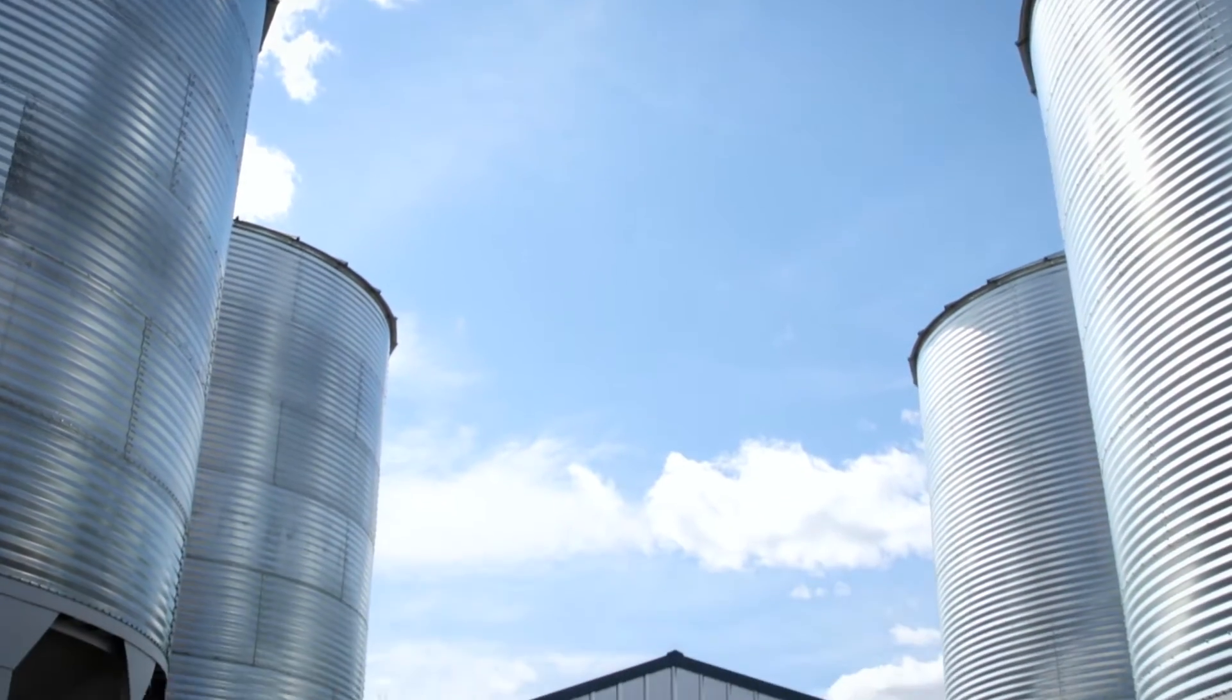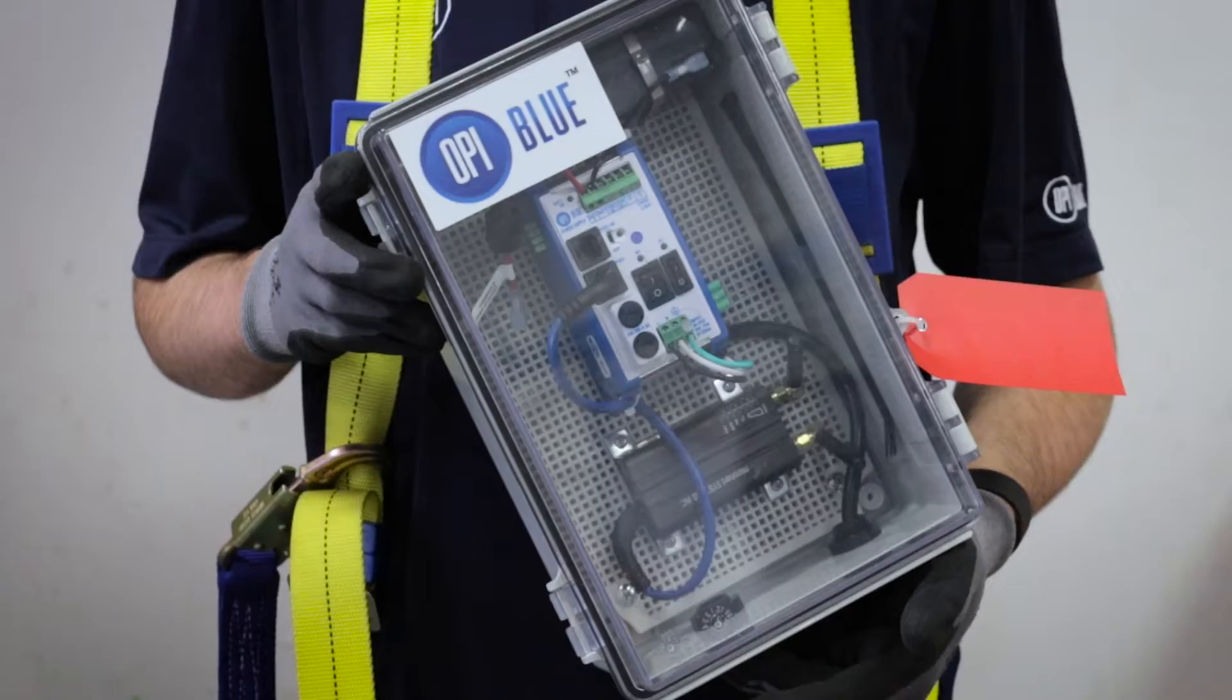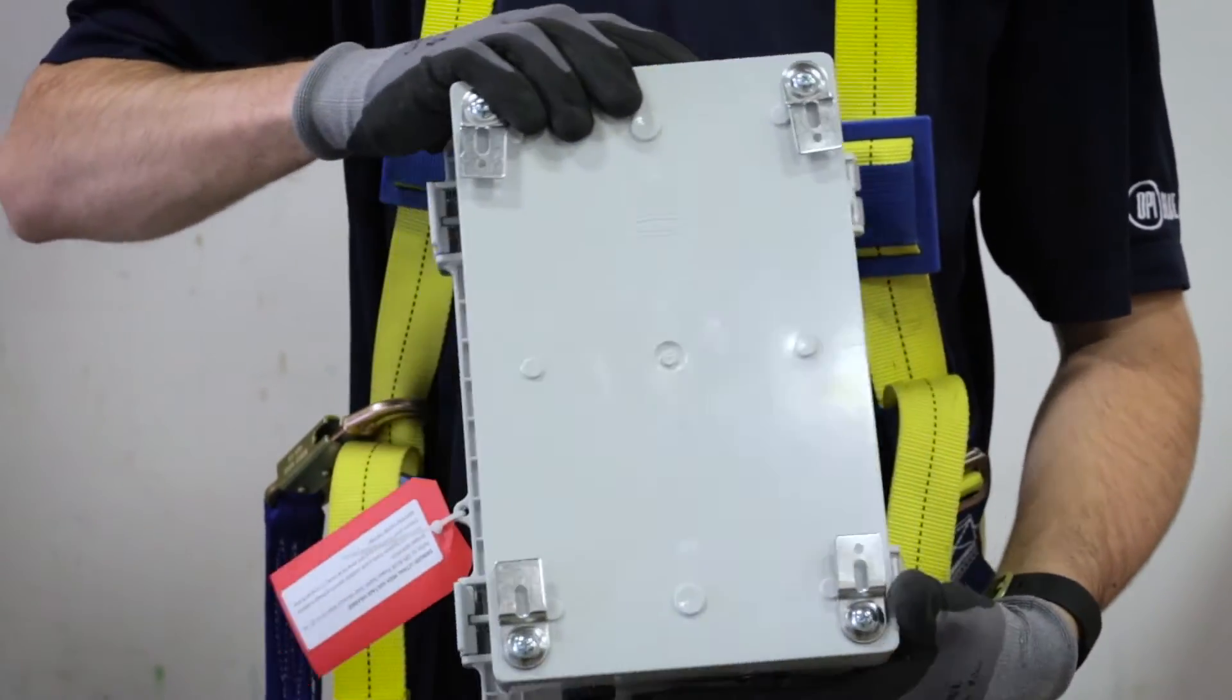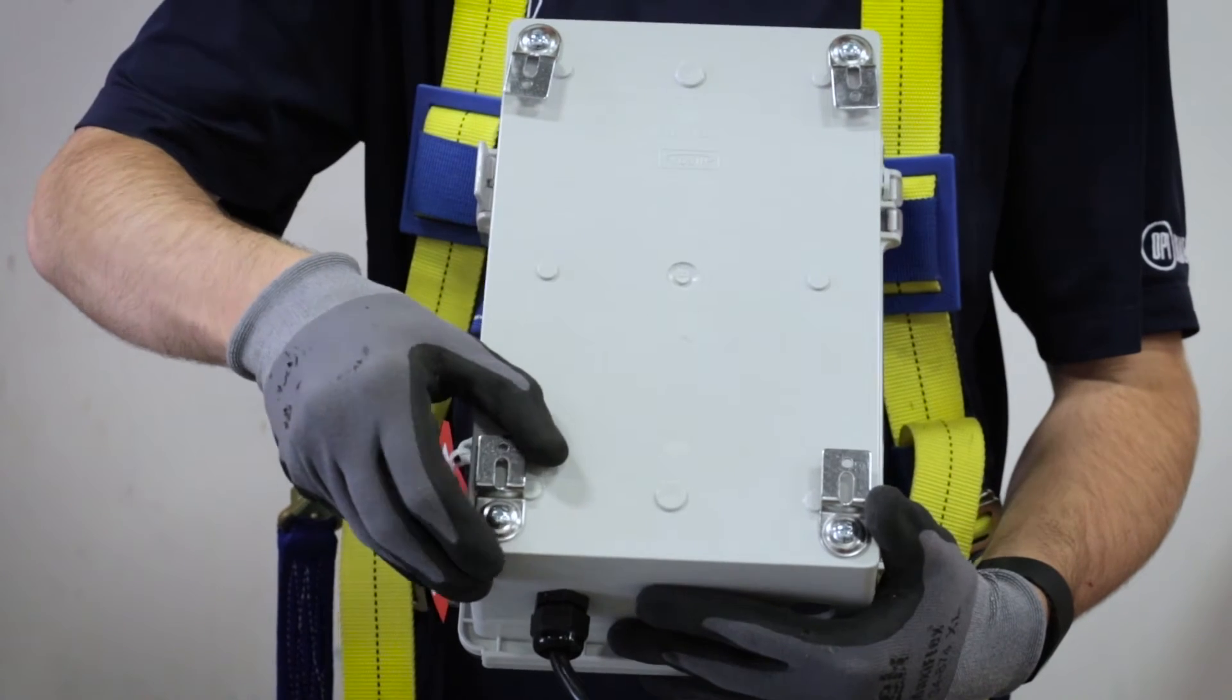After selecting your location for the Gateway Node and PowerPanel, you'll mount the PowerPanel first. There are four mounting brackets on the back of the PowerPanel that require readjusting before mounting.